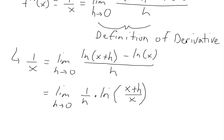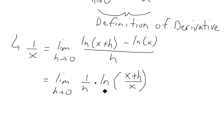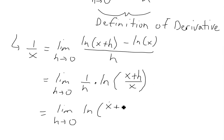We can further simplify by bringing the 1 over h up as an exponent of the logarithm. So this becomes the limit as h approaches 0 of ln of x plus h divided by x, all to the power of 1 over h. And this still equals 1 over x.